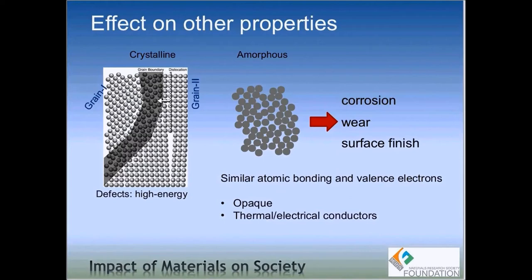In amorphous metals, we don't have defects like grain boundaries and dislocations, and that translates into very high corrosion resistance. Metallic glasses are also extremely hard, which results in very high wear resistance. And since there are no defects, that is also reflected in the surface finish — so the attractive properties of amorphous versus crystalline metals are high corrosion resistance, high wear resistance, and extremely smooth surface finish.